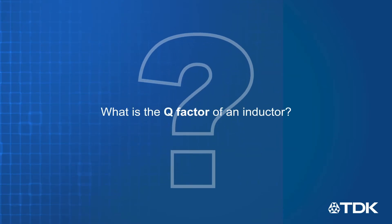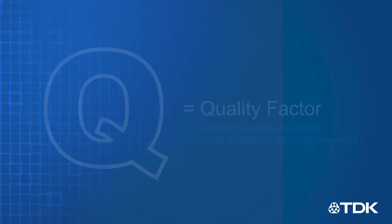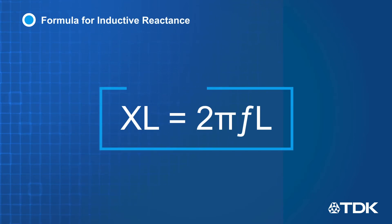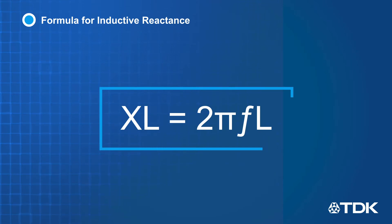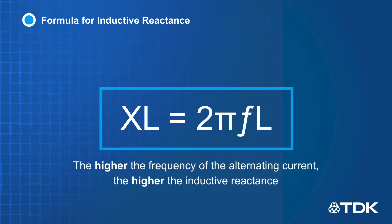What is the Q value of an inductor? Q stands for quality factor and is a parameter that indicates the quality of an inductor and its suitability for use at high frequencies. Inductors easily pass direct current but act as a resistor to alternating current. This behavior is called inductive reactance and is calculated as 2 times pi times the frequency of the alternating current times the inductance. So the higher the frequency of the alternating current, the higher the inductive reactance.